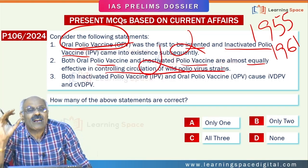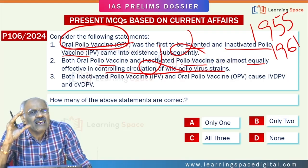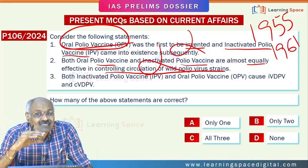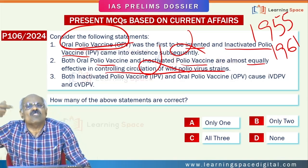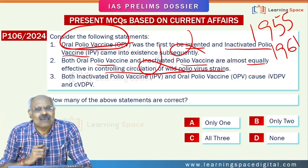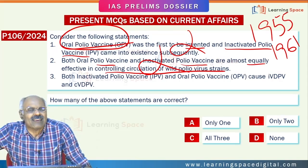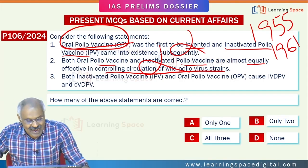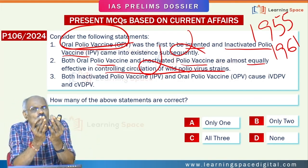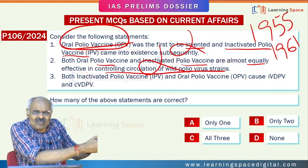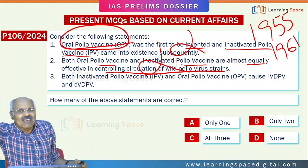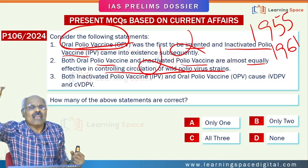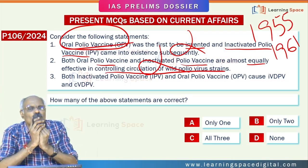To control wild polio virus strains, multiple rounds of oral polio vaccine are required. Once the wild polio virus strain is eradicated, you can switch over completely to IPV. IPV is not effective enough at controlling the circulation of wild polio virus strains.